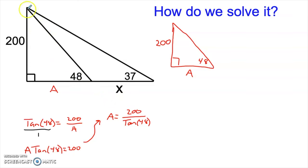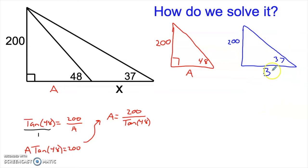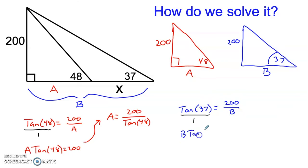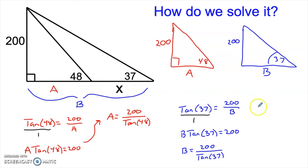The key is in realizing that in this larger triangle, which is also a right triangle, we can solve for the missing side just like we did there. If I look at the larger triangle and call this missing side 'b', we can again solve by simply using tangent. So we can say the tangent of 37 is 200 over b. Cross-multiplying gives us b times tangent of 37 equals 200, and dividing both sides by tangent of 37, we get b equals 200 divided by tangent of 37. And x is just b minus a.